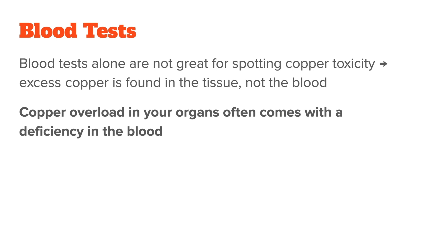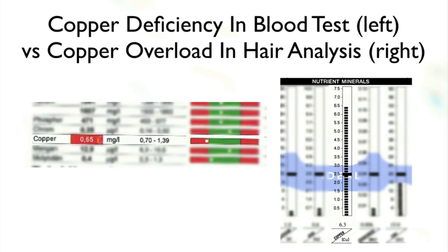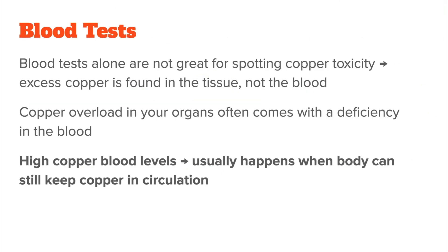The copper overload in your organs often also comes with a deficiency in the blood. My first blood test was the perfect example of this — it showed a copper deficiency, after which I was told to supplement copper. This would have made my symptoms a lot worse and I'm glad I didn't. Sometimes you do get lucky and the person has high copper blood levels, which usually happens when the copper overload is fairly new or when the body can still keep copper in circulation, so bioavailable.